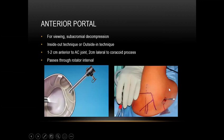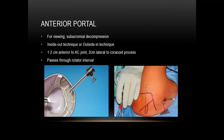The anterior portal is used for viewing and subacromial decompression. There are two techniques: inside-out and outside-in. We commonly use the outside-in technique, identifying the landmark 1 to 2 cm anterior to the AC joint, just lateral to the coracoid process. A needle is inserted and visualized from the posterior portal. Once satisfied with the position, a switching stick is inserted and then the trocar portal is established. The inside-out technique involves passing a switching stick from the posterior portal and exiting at the anterior safe zone, but the outside-in technique is the safest method. This portal passes through the rotator interval.